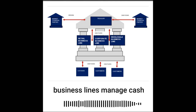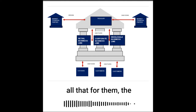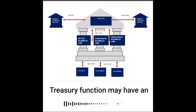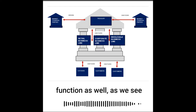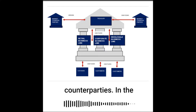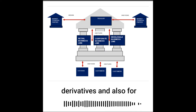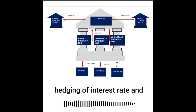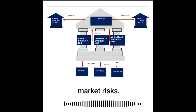and the business lines manage cash flows from their customers in or out. Treasury then clears all that for them. The treasury function may have an external market-facing function as well, as we see on the left-hand side, dealing with market counterparties in the money markets for cash and derivatives, and also for structural balance sheet hedging of interest rate, foreign exchange, and other market risks.